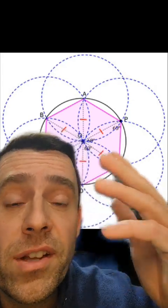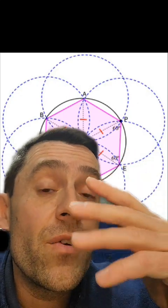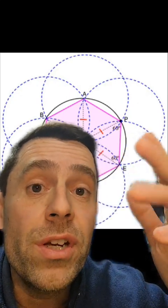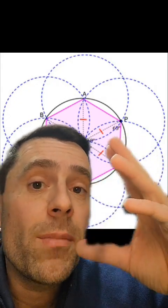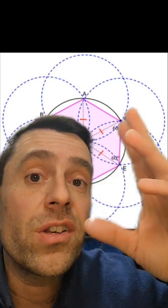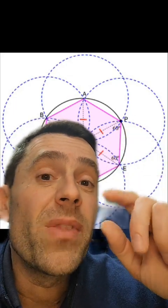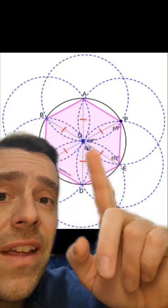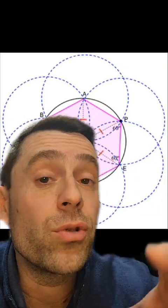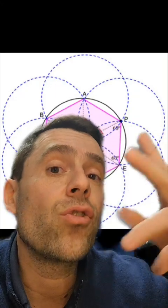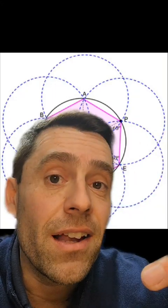Constructing polygons with a straight edge and compass is actually a very classical problem in geometry that has been around for thousands of years. And many geometers have tried to find constructions of other polygons, in particular those polygons with a prime number of sides. Because if you can construct a triangle, then it's easy to construct a hexagon out of that triangle. Similarly, if you are able to construct a pentagon, it's easy to construct a polygon with ten sides.